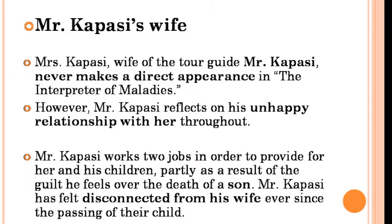The last character is Mr. Kapasi's wife. Mrs. Kapasi, wife of the tour guide Mr. Kapasi, never makes a direct appearance in The Interpreter of Maladies. However, Mr. Kapasi reflects on his unhappy relationship with her throughout. Mr. Kapasi works two jobs in order to provide for her and his children, partly as a result of the guilt he feels over the death of his son. Mr. Kapasi has felt disconnected from his wife ever since the passing of their child.